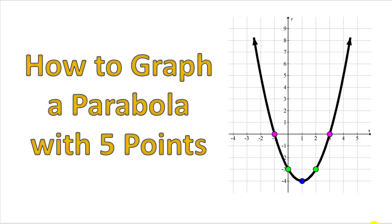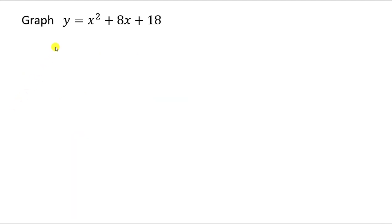In this video I'm going to show how to graph a parabola by finding and plotting five points. We'll use the function y = x² + 8x + 18 as our example. The overall idea is to first find the vertex, then find four additional points — two to the left and two to the right of the vertex — using the fact that a parabola is a symmetric graph.